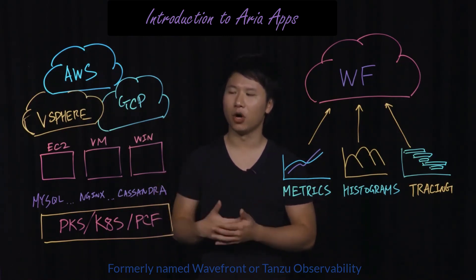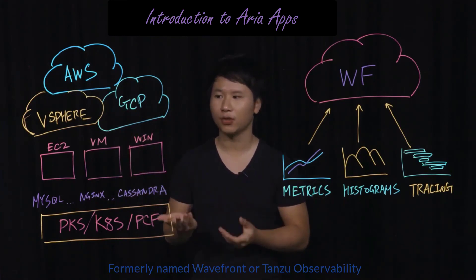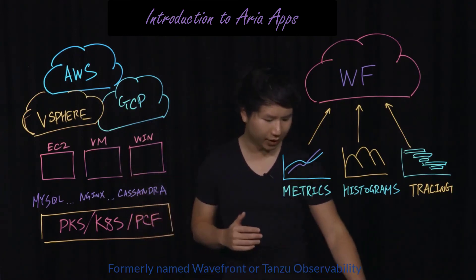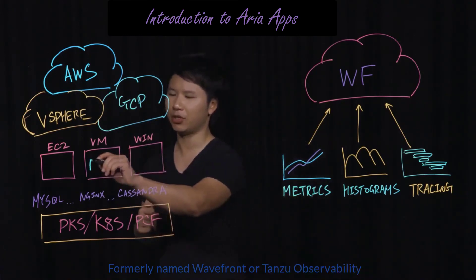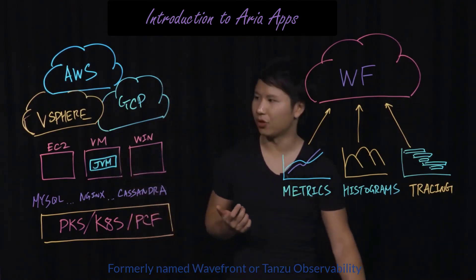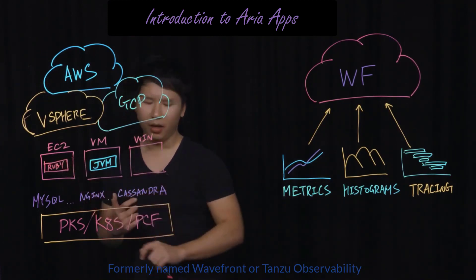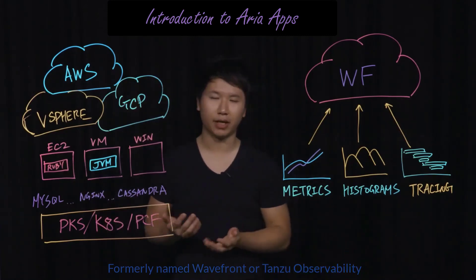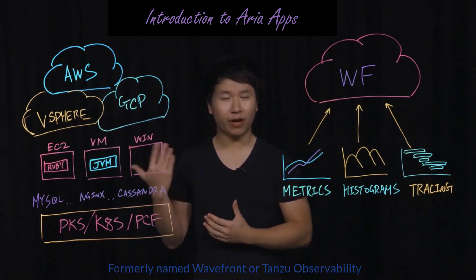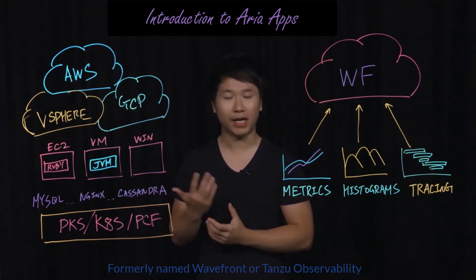A lot of observability that is now being done on applications themselves are also natural candidates for representing as time series. For example, in the past, if you were building an application in a VM and you decided to choose Java running inside a JVM, or perhaps Ruby running inside EC2, you might have been tempted to just use logging as your mechanism for understanding what is actually happening to your application. But what we and a lot of our customers have found is that a lot of that logging information is actually time series information.